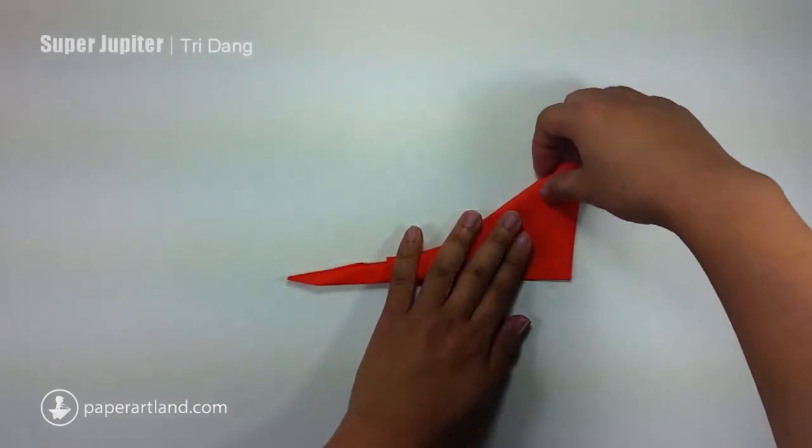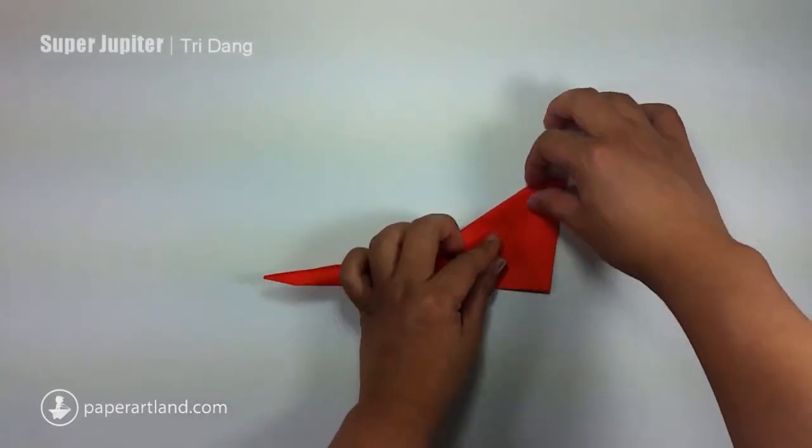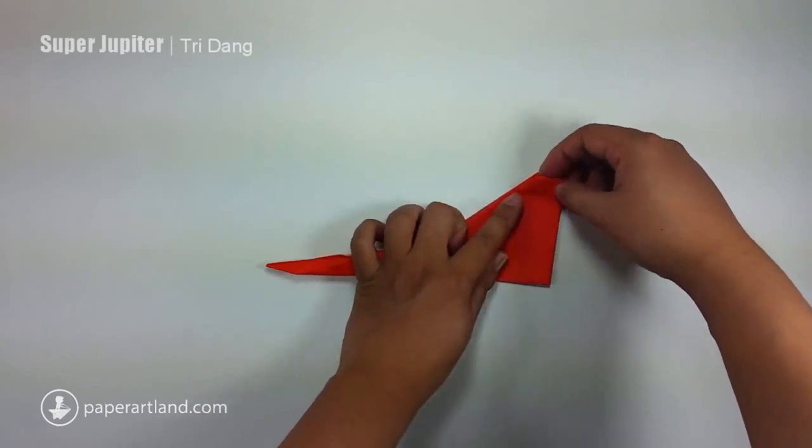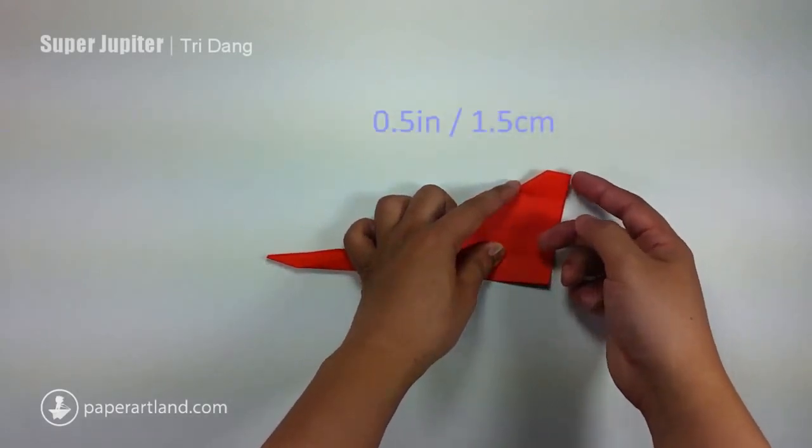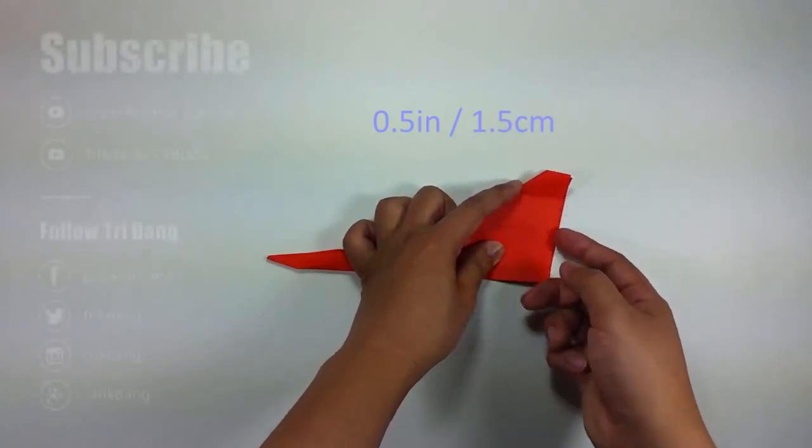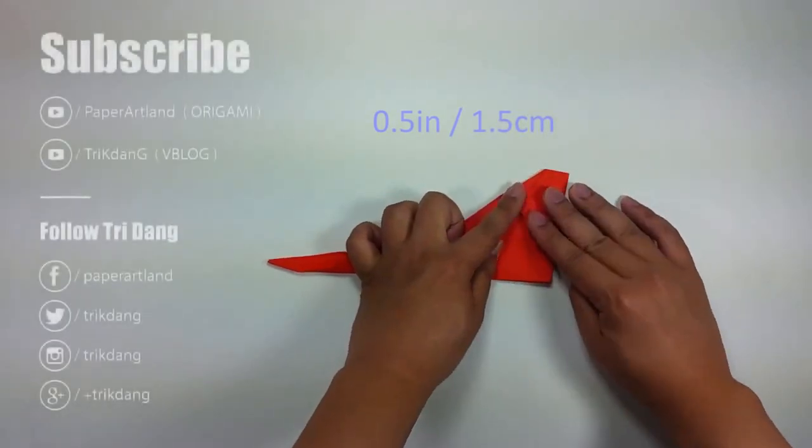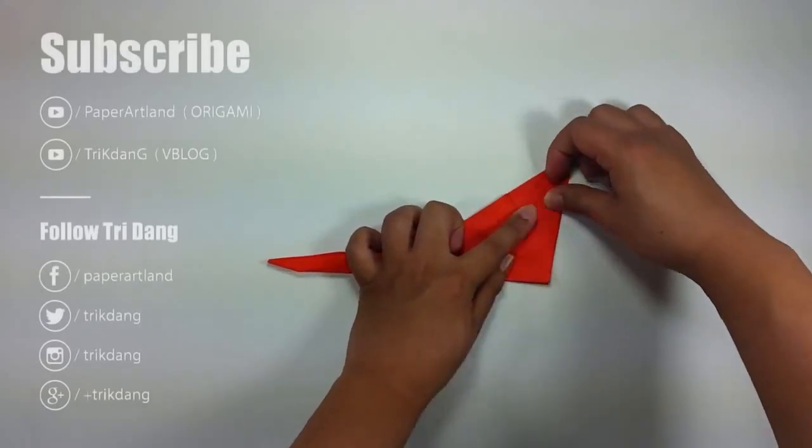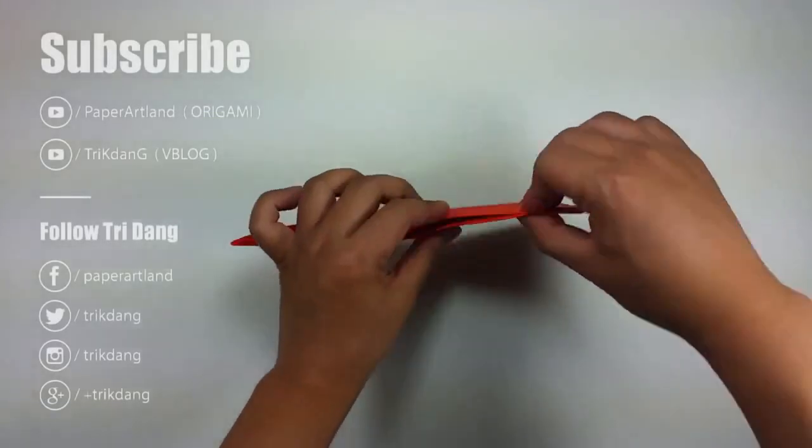Next step, I fold this part up to create the stabilizer. I estimate about half an inch from this corner along this edge and I just match this edge to this part of the edge. Same thing for the other side.